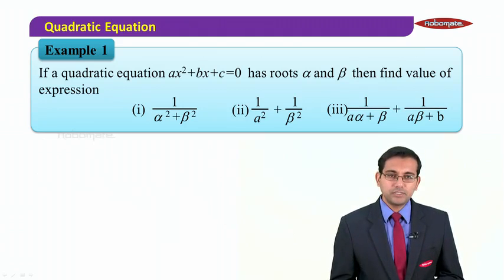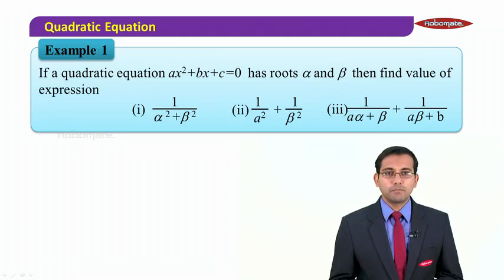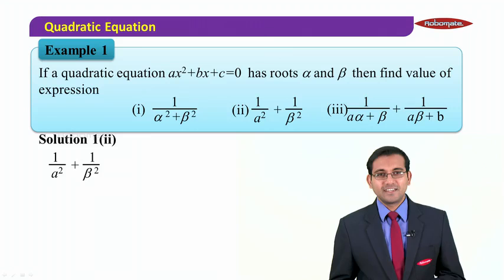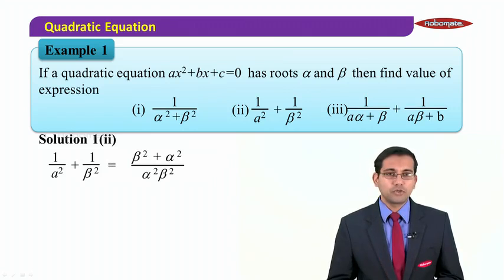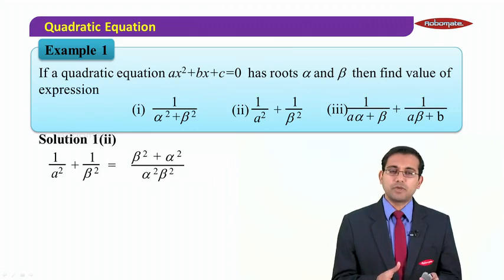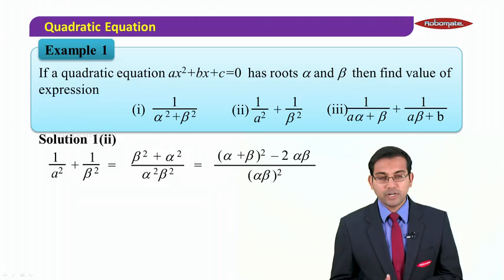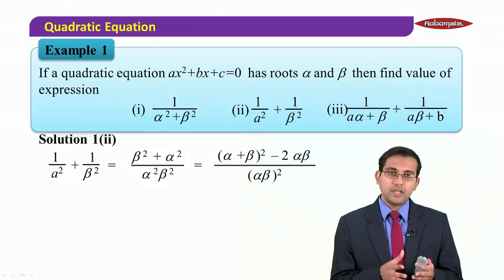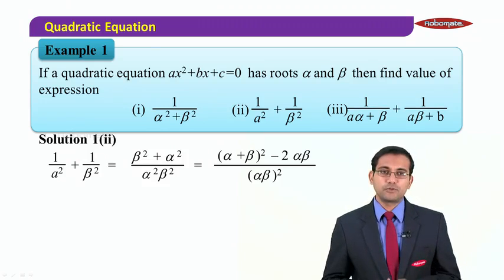Now for the second expression, 1/α² + 1/β². This is also a symmetric expression, so we can write it in terms of α+β and αβ. Cross-multiplying gives (β² + α²)/(α²β²), which can be written as [(α+β)² − 2αβ] in the numerator and (αβ)² in the denominator.